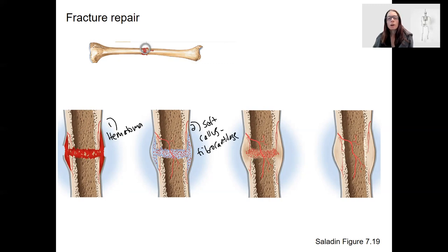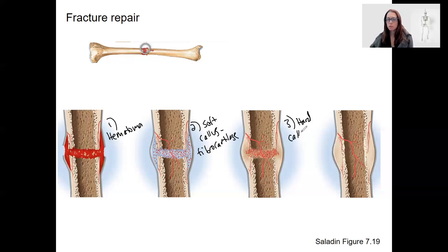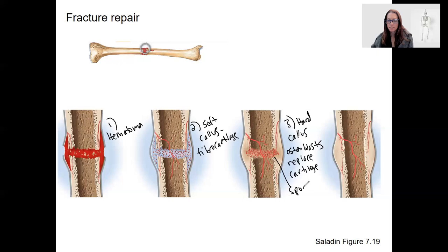The soft callus is a fibrocartilage formed by chondroblasts and fibroblasts, creating this temporarily protective callus. Then a hard callus forms. What forms it? Osteoblasts come in and replace that cartilage — kind of like endochondral ossification. First, this is going to be replaced by spongy bone, with those trabeculae forming first until it's filled in.